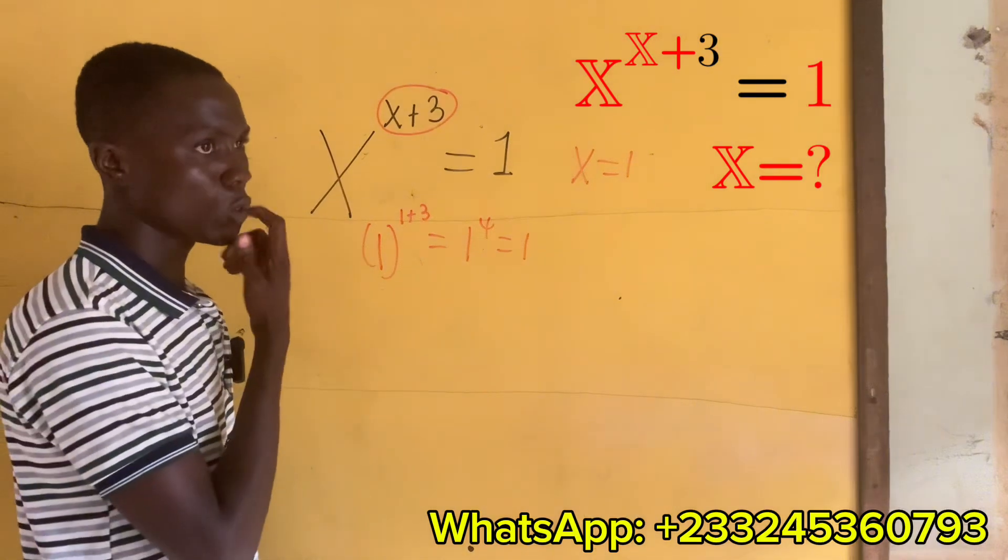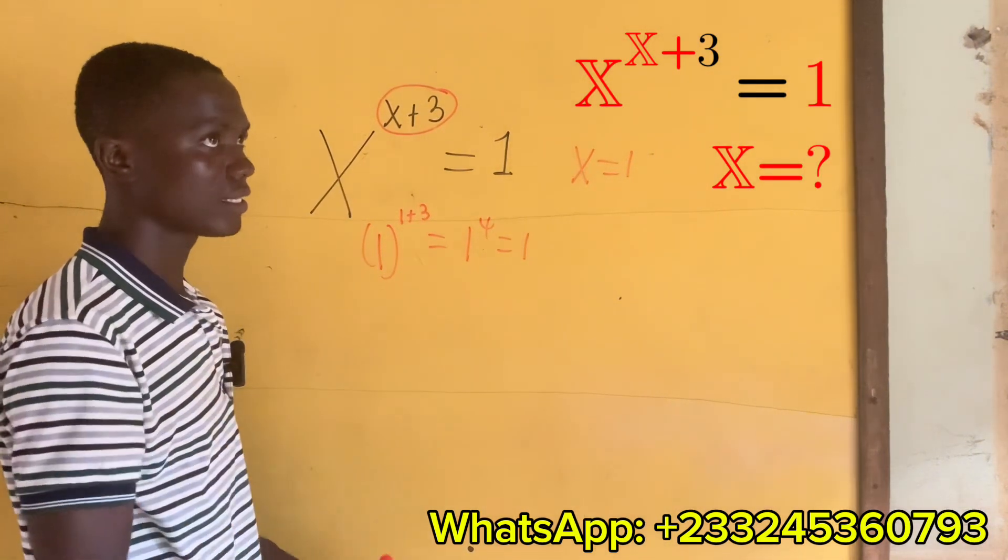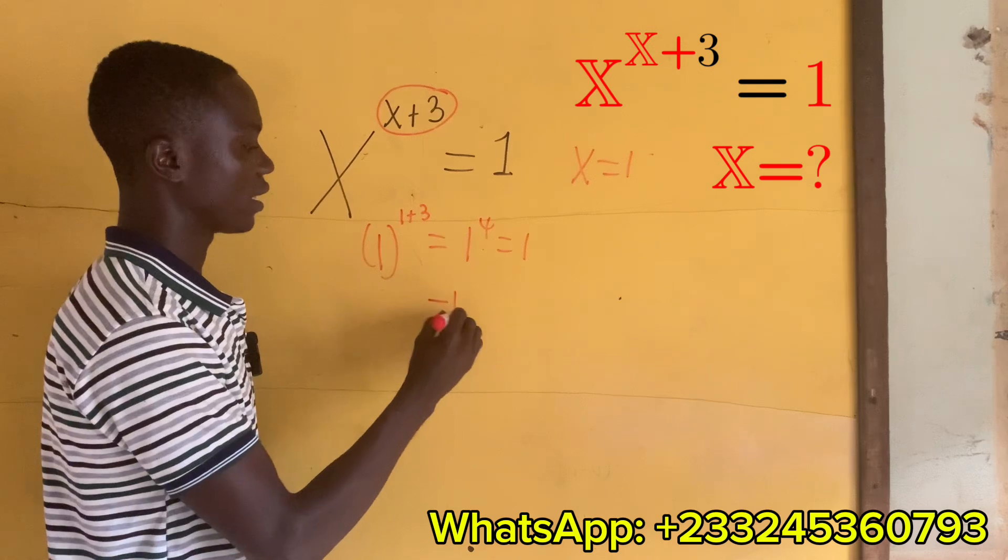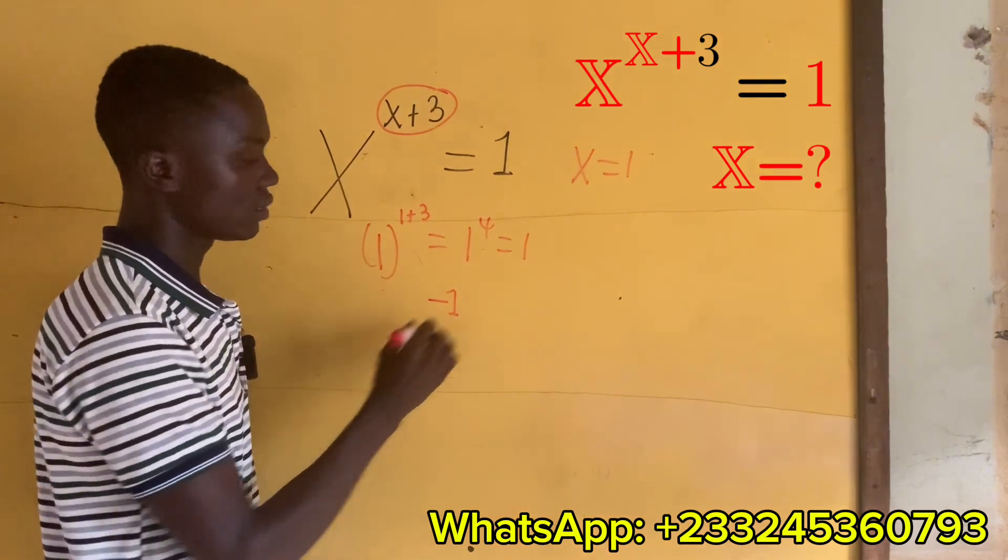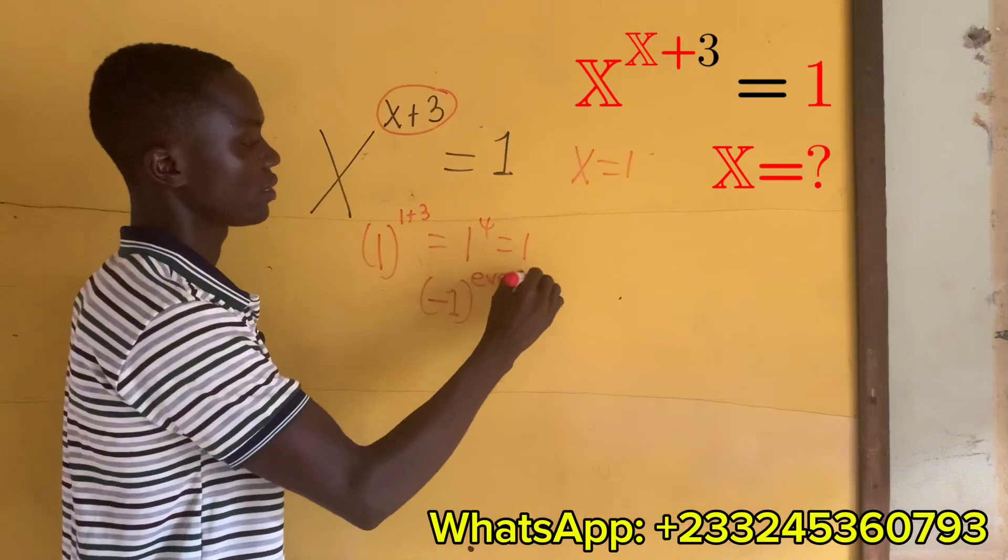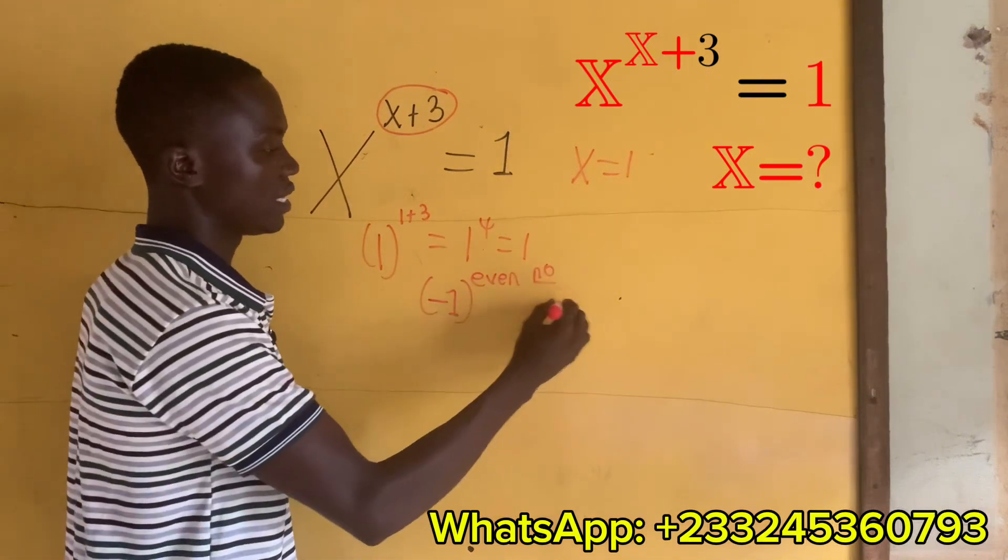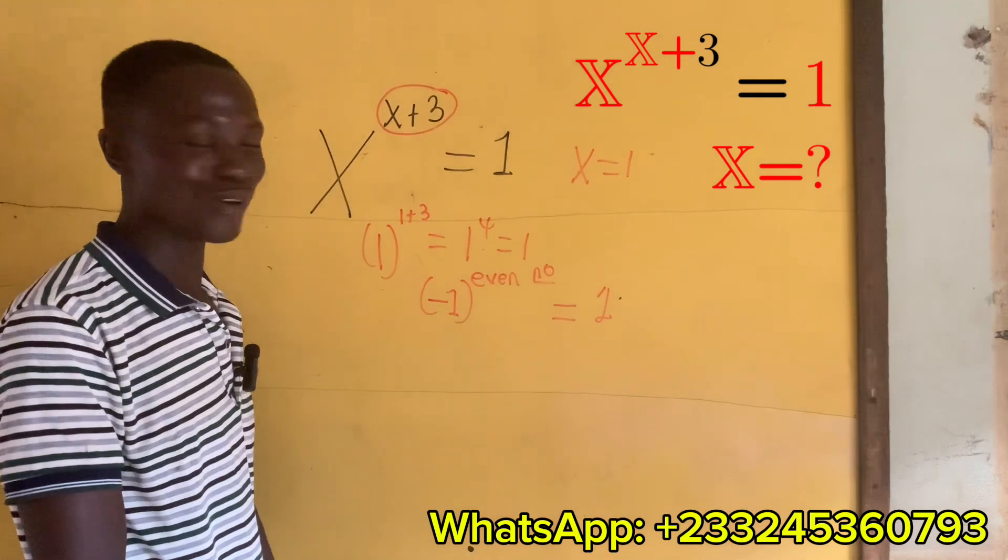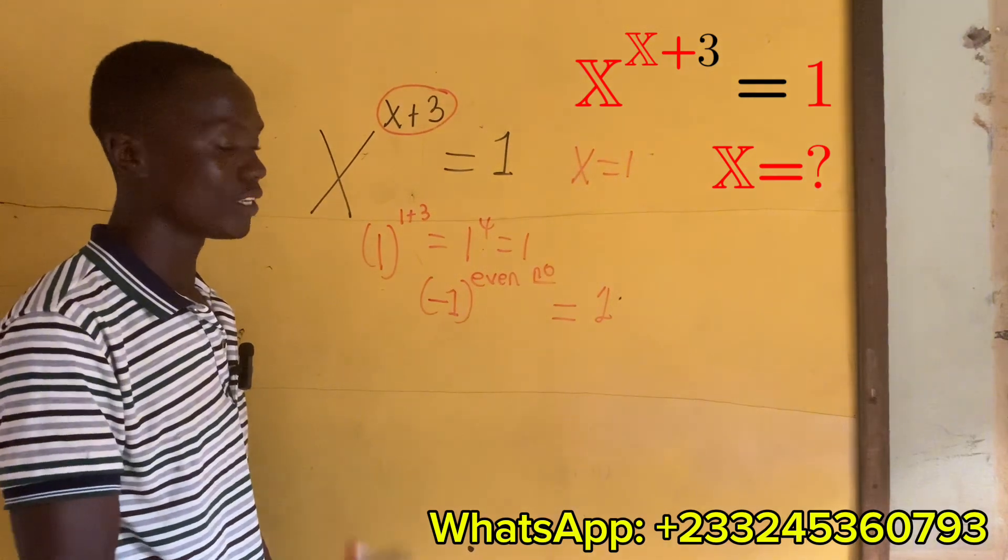Then let us look at this one. You see that if I have negative 1 exponent an even number, it is gonna give me positive 1.